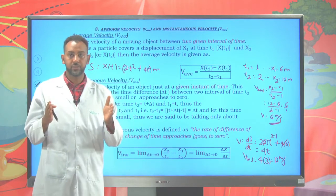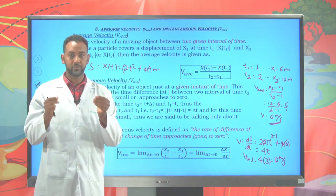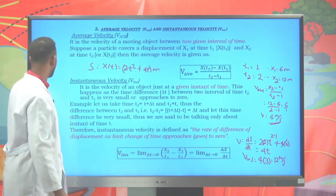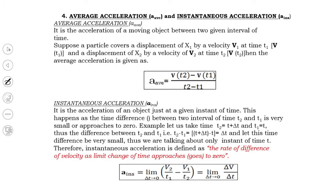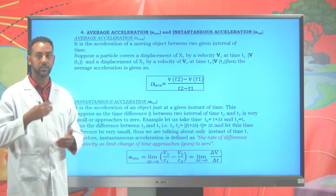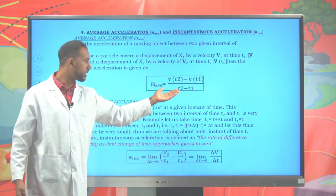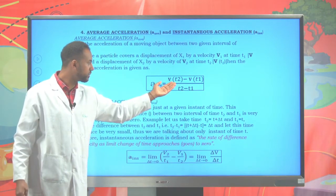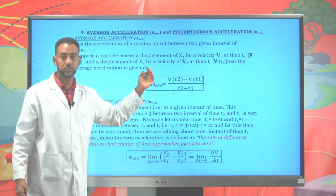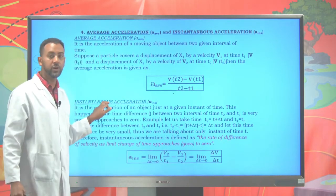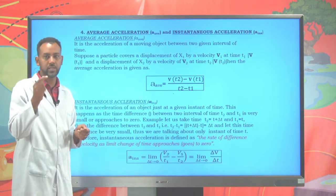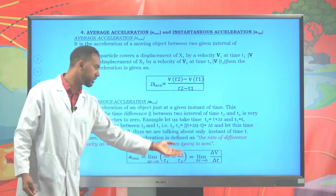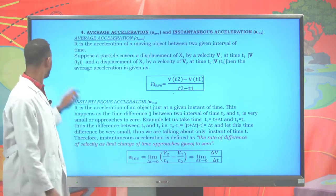The same is true for acceleration — we have average acceleration and instantaneous acceleration. Average acceleration is between two time intervals: (v₂ - v₁)/(t₂ - t₁). Instantaneous acceleration is acceleration at a given instant time t, and it is found using the derivative of the velocity function.